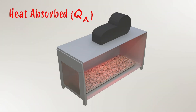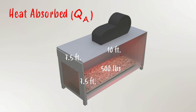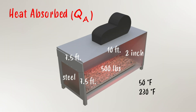Step one: gather information. Let's say you have an oven that is used to heat 500 pounds worth of granite blocks in a batch process. The oven is seven and a half feet wide, seven and a half feet high, ten feet long, and has steel walls with two-inch thick fiberglass insulation. In this scenario, we need to determine the amount of heat in kilowatts absorbed by the granite as they're being heated from 50 degrees to 230 degrees in two hours.